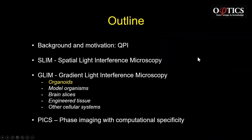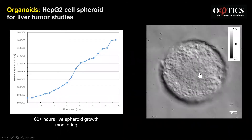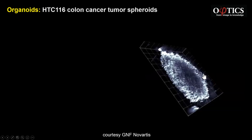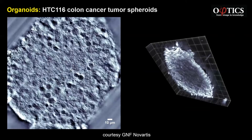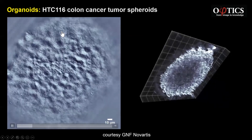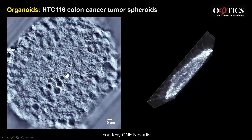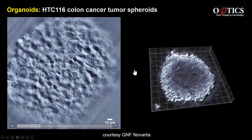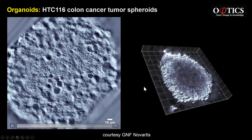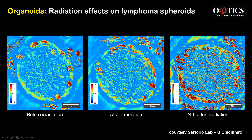Everybody is very excited in the spheroid organoid field to use GLEAM to look at viability without fixing and tagging with fluorescence. Here is a human liver cancer model and a colon cancer model — you can render it in 3D and look in the center to see how it responds to treatment or how cells develop. Our collaborators at Cincinnati were blown away that you can see the effect of radiation on their lymphoma spheroids with intrinsic contrast, which is very exciting for them.